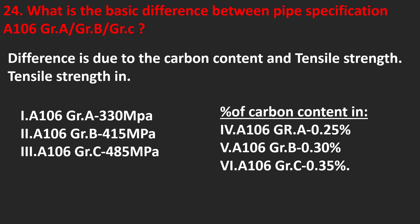What is the basic difference between pipe specification A106 Grade A, Grade B, and Grade C? The difference is due to carbon content and tensile strength. A106 Grade A has tensile strength of 330 MPa and carbon content of 0.25%. A106 Grade B has 415 MPa and 0.30% carbon. A106 Grade C has 485 MPa and 0.35% carbon.